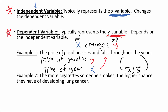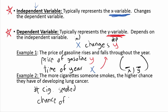Next example: the more cigarettes someone smokes, the higher chance they have of developing lung cancer. The two variables are the number of cigarettes smoked and the percent chance of lung cancer. Let's apply the 'X changes Y' method, starting with number of cigarettes smoked as X and percent chance of lung cancer as Y.